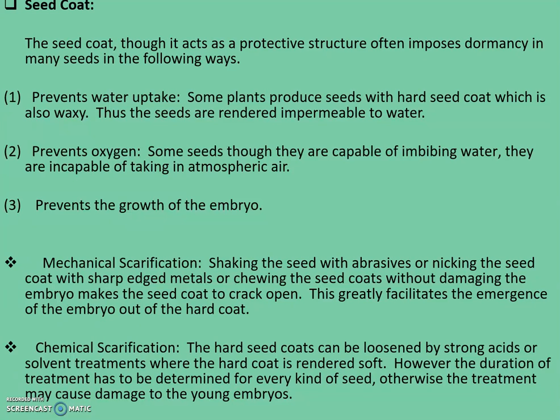The seed coat, though it acts as a protective structure, often imposes dormancy in many seeds. Many seeds are incapable of germinating immediately because of the hard seed coat, which is thought to be too tough to break open by the developing embryo. It often does not imbibe water, and even oxygen does not diffuse in — both being the most important factors favorable for germination. Some plants produce seeds with a hard, waxy seed coat, rendering them impermeable to water. For example, in some fabaceous members like pine, water enters through the hilum, which is made up of hygroscopic tissues.